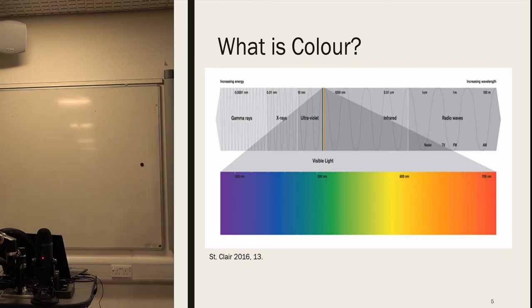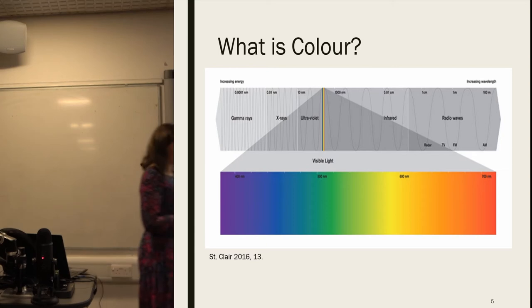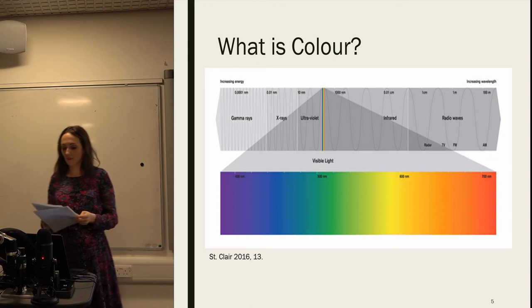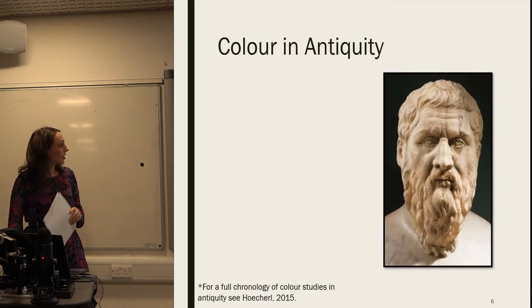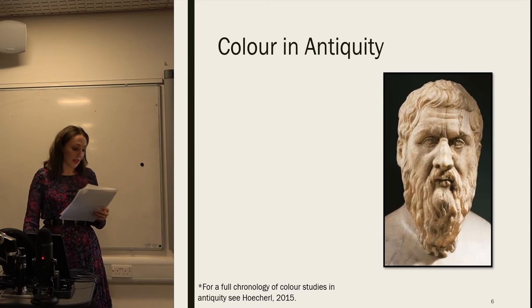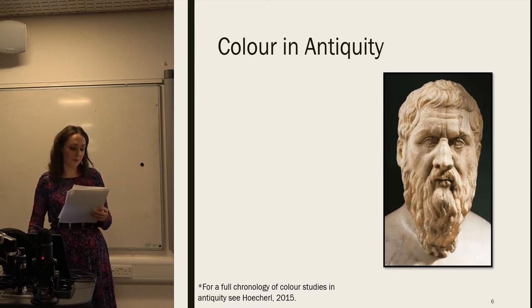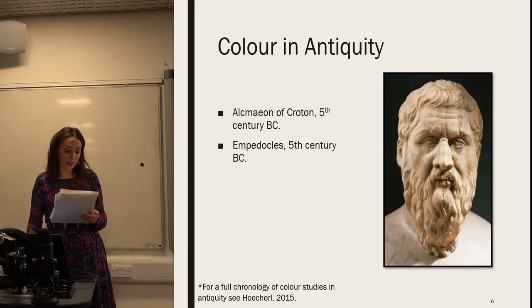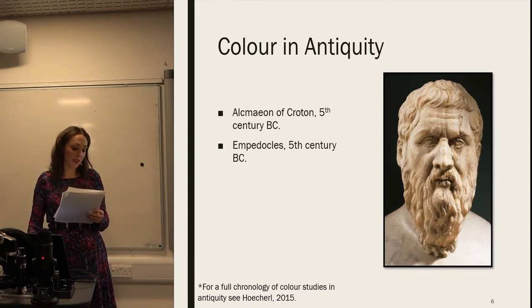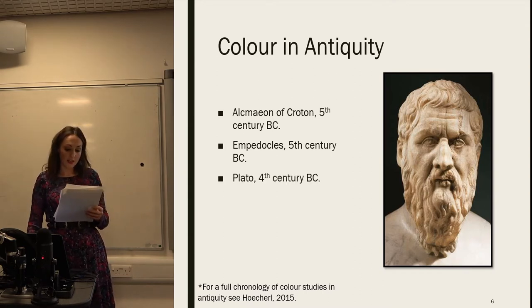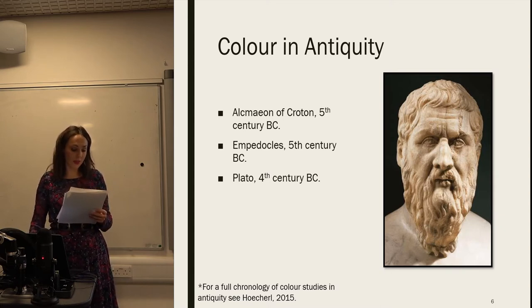At 10 nanometres you can't see ultraviolet, and similarly infrared. So that's a scientific explanation of what colour is. But early Greek writers give us our earliest understanding of ancient people's approaches to colour, and we know they were pondering the antithesis of black and white, and associated black and white as well as primary colours with the Earth's elements. By the fourth century BC, Plato was writing that the eye could dilate to coloured stimuli, and while this is in fact incorrect, it shows that there was a will to understand sensory stimuli with colour at this time.